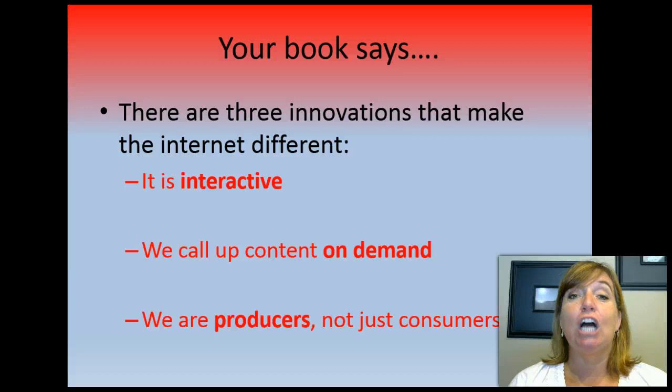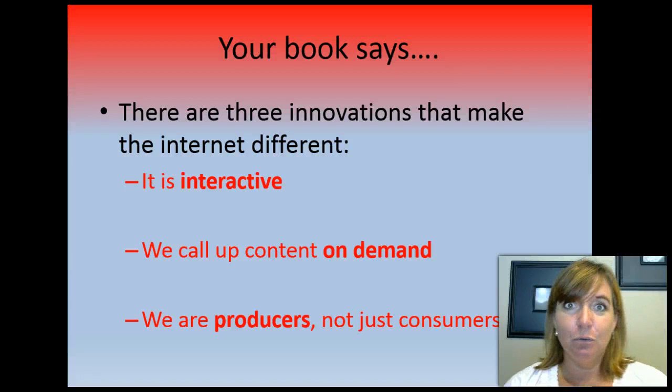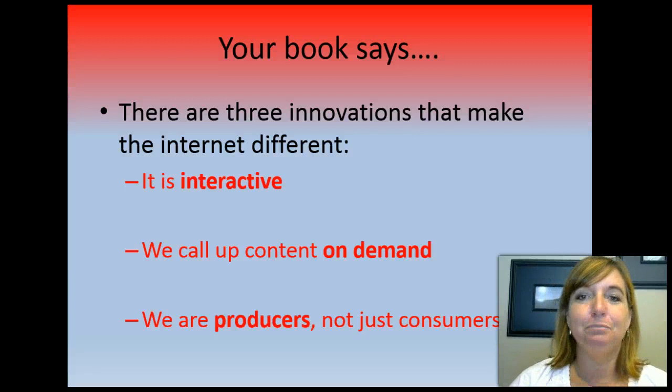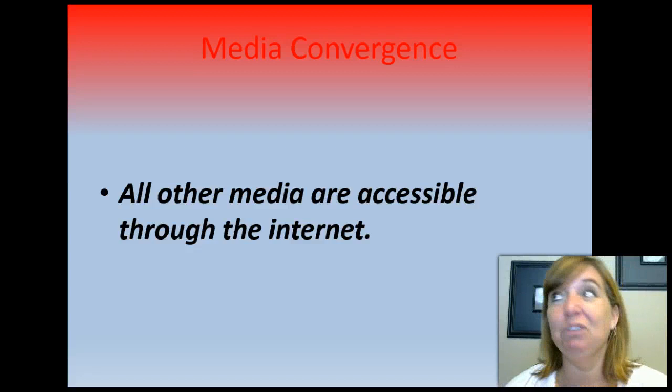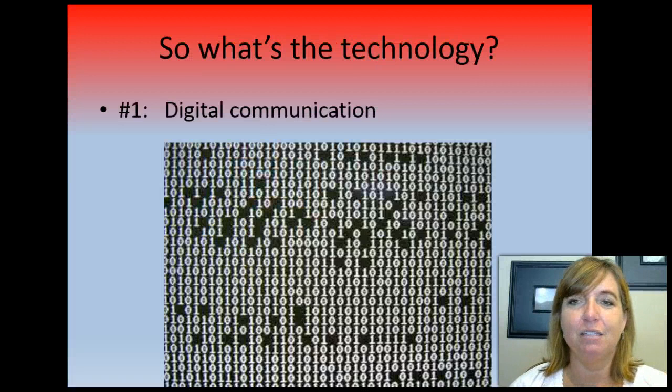Your book says there are some things about the internet that make it different from other media. It's interactive — we call it content on demand. Of course, now television is getting to be more and more like that. But we're producers, not just consumers. When we go to the movie theater, we're watching media created by other people, by Hollywood studios. When we get on YouTube, most likely we're watching media created by people just like us — that's called the democratization of media content. We talked about media convergence already this semester, and really every form of media is available on the internet — television shows, books, movies, music, magazines — everything. It's convergence.